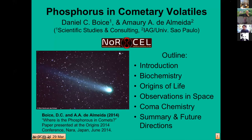Good morning from San Antonio, Texas. I'm Daniel Boyce. I'm an astronomer and today I would like to present work that I've done with my colleague Professor Dalmita from the University of Sao Paulo, an astrochemist. Our interest has been in planetary science, particularly comets, and we would like to look at how our work borders on issues that are very important for origins of life. Today I'd like to talk about phosphorus in cometary volatiles.